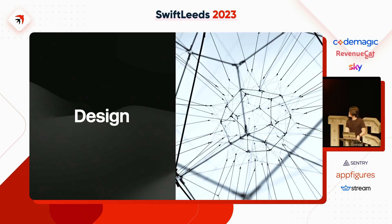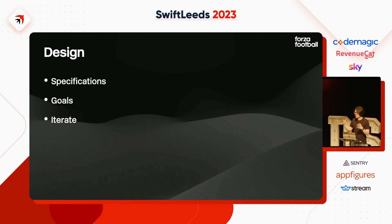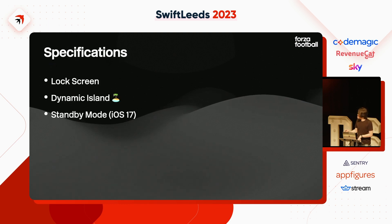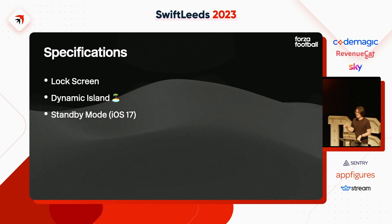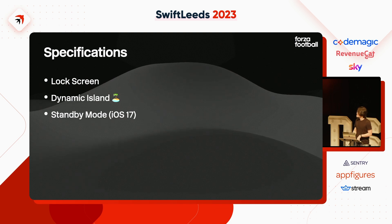Let's start with the design — the UI design for looks and feels of the live activity. I'll split into three parts: specifications (the rules and sizes Apple gave us), goals (what we want to bring to users), and iterations (the many revisions we went through). For specifications, live activity can appear in three places: the lock screen, the dynamic island, and in iOS 17, standby mode as well. You have to implement all of them — you cannot just support the lock screen and skip the dynamic island.